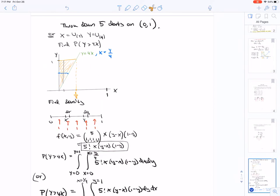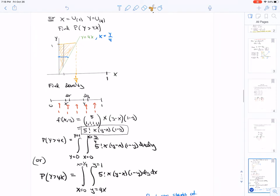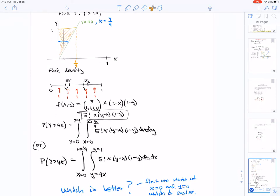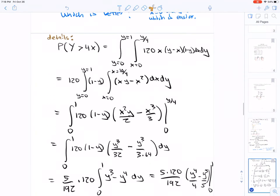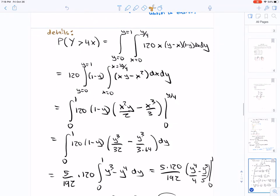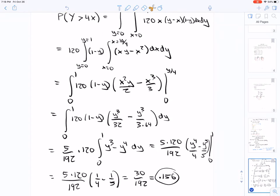Then we did a bunch of examples of calculating probabilities. Here, if X is the second order statistic and Y is the fourth order statistic and you want to find the probability that Y is greater than 4X, we first figured out what the density is and then we did a double integral. The first one I think is a better choice because it starts at x is zero and y is zero. I provide you details here, so just check that you get the right answer.